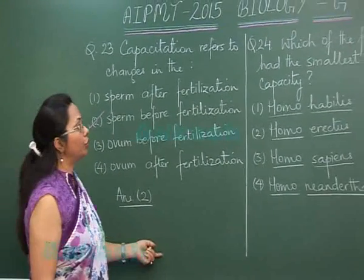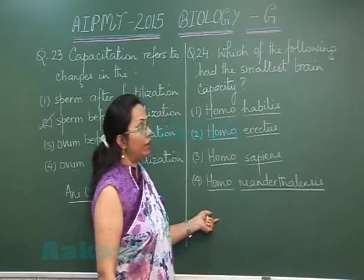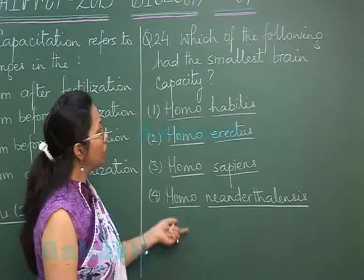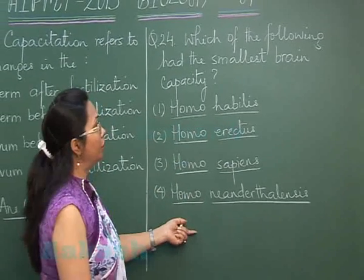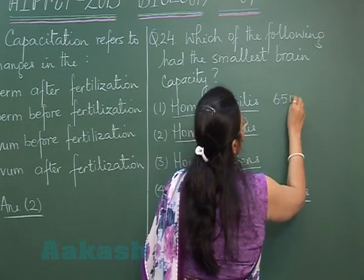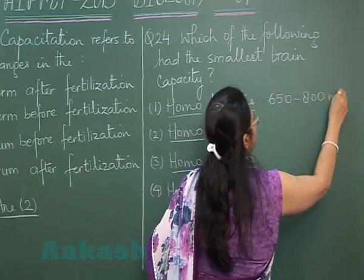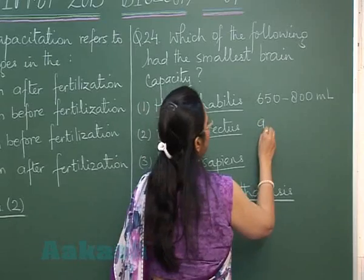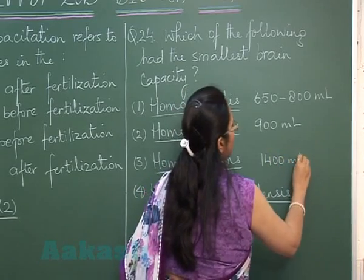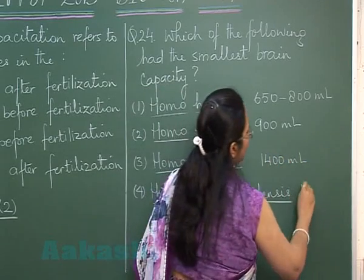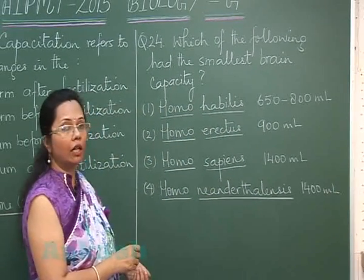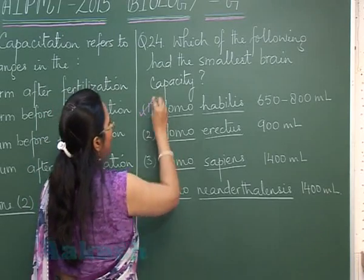Let's move on to question 24 — another capacity question, but here it is brain capacity. Which human ancestor had the smallest brain capacity? Homo habilis had a cranial capacity of 650–800 ml, Homo erectus 900 ml, Homo sapiens 1400 ml, and Neanderthal man also 1400 ml. The least cranial capacity was of Homo habilis, so our answer is 1.